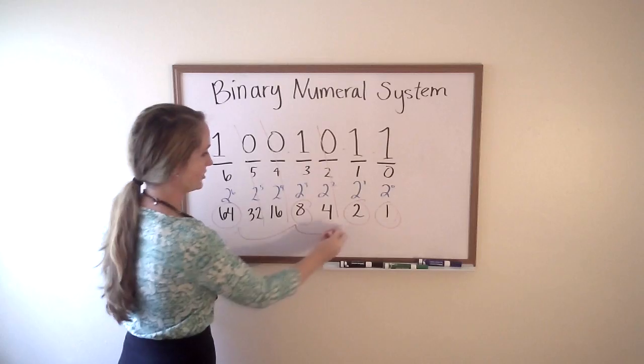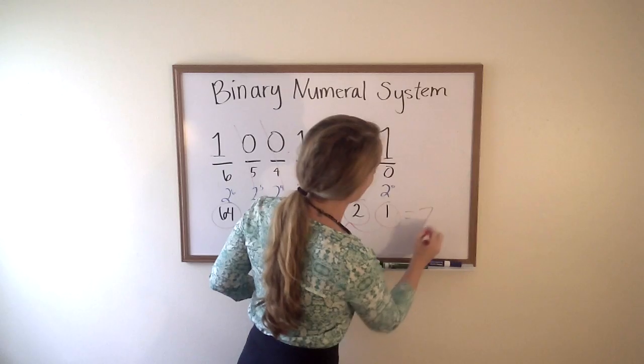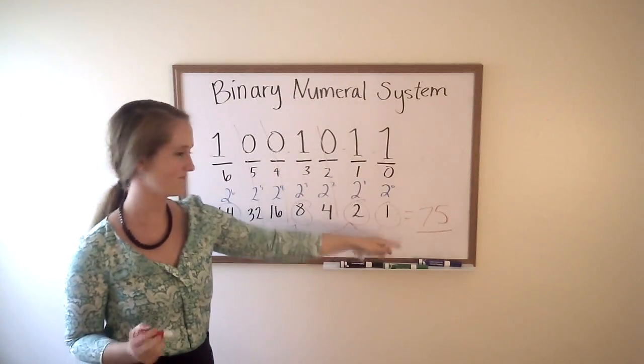Basically, from here on out, we're just going to add these four numbers together, getting us 72, 74, 75. So this number in binary means 75.